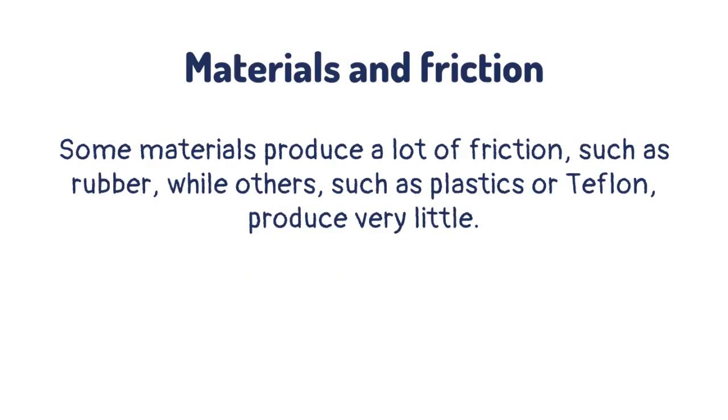Some materials produce a lot of friction, such as rubber, while others, such as plastics or Teflon, produce very little.